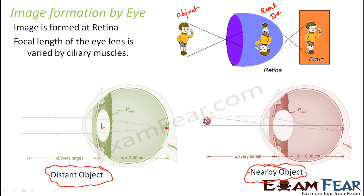When we look at a nearby object, incident rays of light from the object pass through the lens and again converge at a point on the retina, where the image is formed. Since we are talking about a lens, refraction takes place — where the refracted rays meet, the image is formed. The retina is essentially the screen where the image is formed, and depending on the location of the object, the image will be formed accordingly.